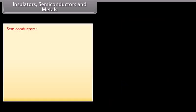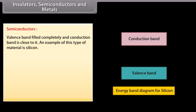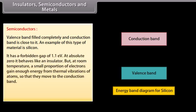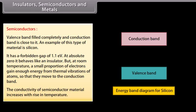Semiconductors have a completely filled valence band and the conduction band is close to it. An example is silicon, which has a forbidden gap of 1.1 electron volts. At absolute zero, it behaves like an insulator. But at room temperature, a small proportion of electrons gain enough energy from thermal vibrations of atoms so that they move to the conduction band. The conductivity of semiconductor material increases with rise in temperature.